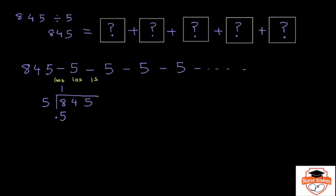So essentially we are breaking down 845 and dividing it in parts — 500 is gone. Subtract 8 minus 5, you have 3, which means 300 are still left. In the next step, you cannot fit even one 500 into 300, so you bring down the next digit — the 4 — making it a 34. But as you can see, the 3 is under the hundreds place and the 4 is under the tens place, so this is actually 340.